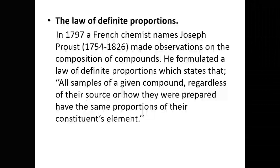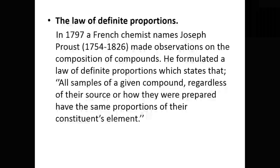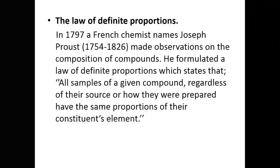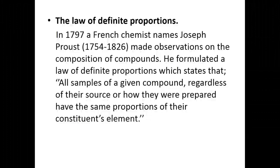After Lavoisier, another scientist, Joseph Proust (1754–1826), spent a long time conducting investigations and formulated the law of definite proportions. He made observations on the composition of compounds and stated that all samples of a given compound, regardless of their source or how they were prepared, have the same proportions of their constituent elements. He observed that no matter where a compound came from or how it was prepared, those elements were always in the same proportions.